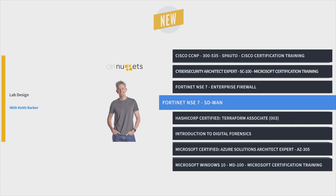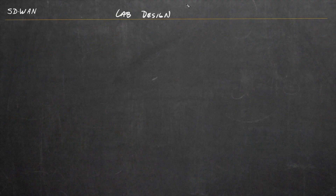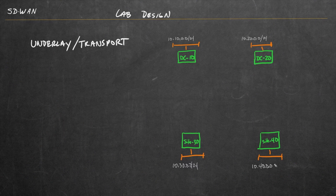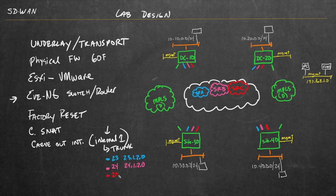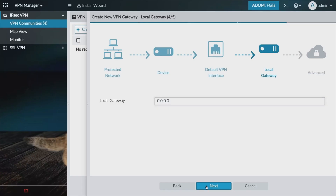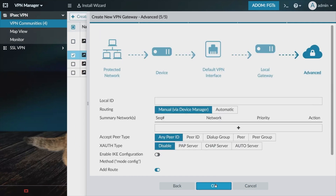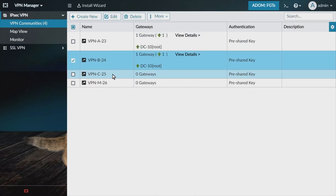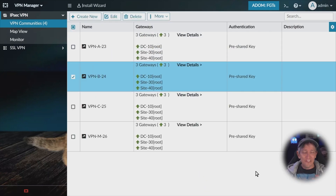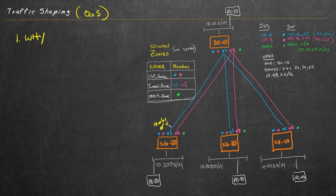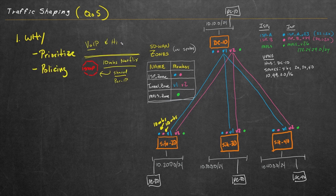And finally, it's Fortinet NSE7 SD-WAN training with Keith Barker. The Fortinet family of network and security devices are powerful, but particular. This course exposes how Fortinet features and solutions enable SD-WAN deployments, and how to take personal responsibility for them. This Fortinet SD-WAN course will prepare you for one of the concentration exams needed to earn the NSE7. And once you're done with this training, you'll know how to configure and manage some of Fortinet's most advanced security features for their family of SD-WAN network solutions.